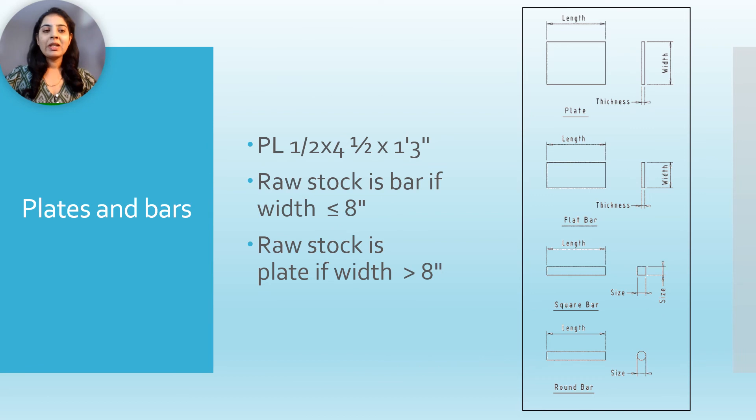Historically there is very little difference between plates and bars. Raw stock is bar if its width is less than or equal to 8 inches, and raw stock is plate if its width is greater than 8 inches. So visually we can see here, this is the plate, its width is greater than 8 inches, and this is the bar, its width is less.